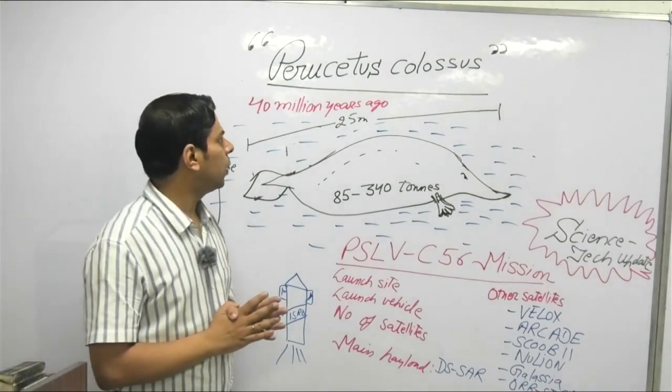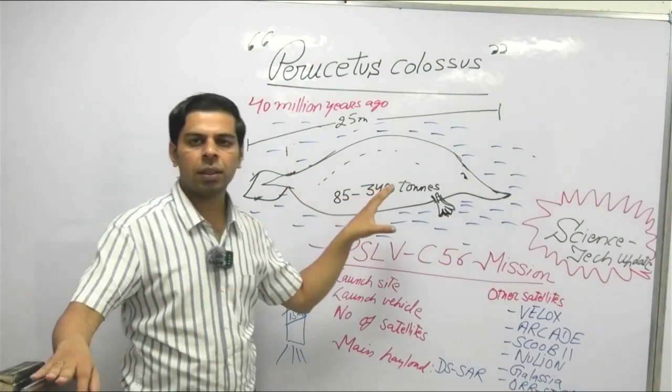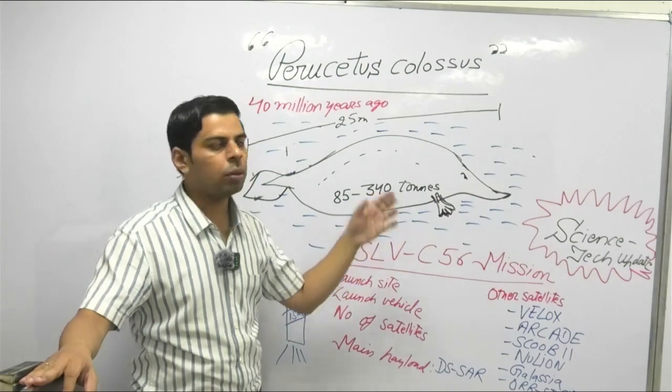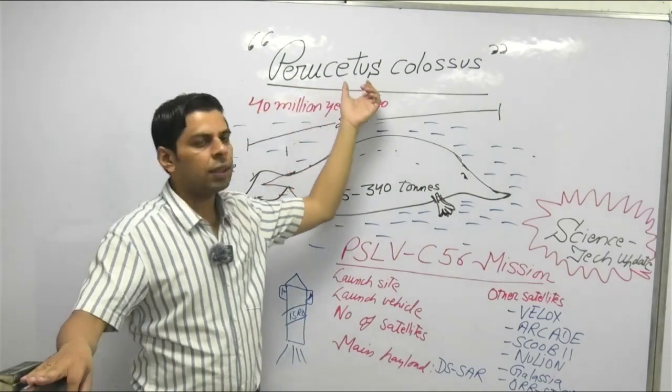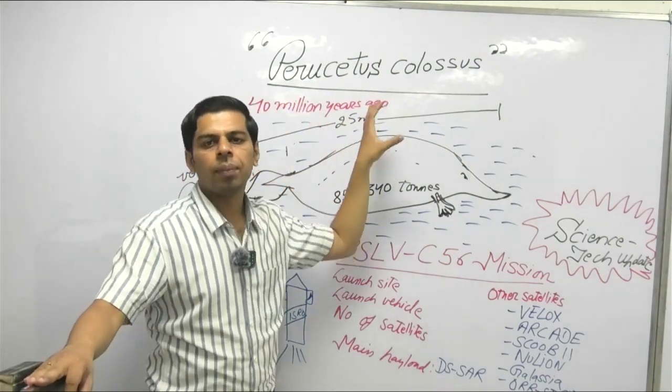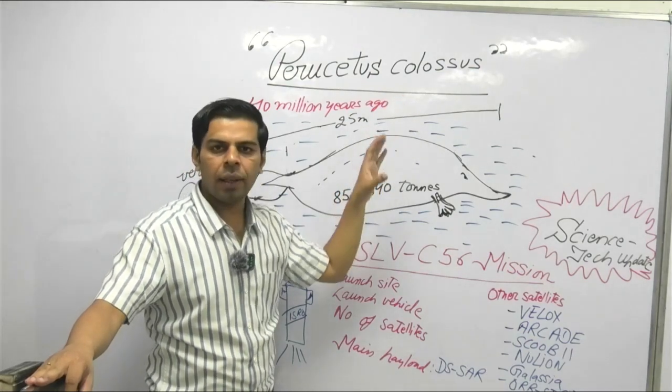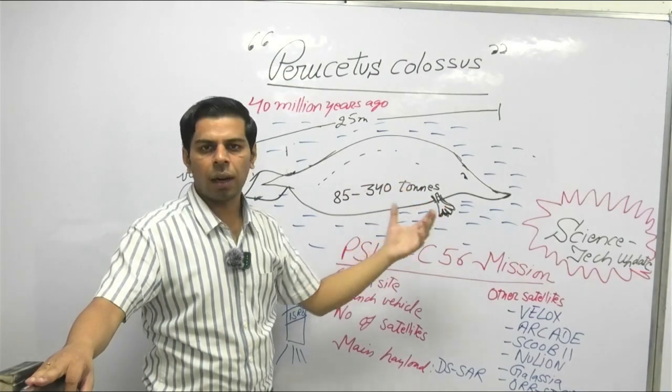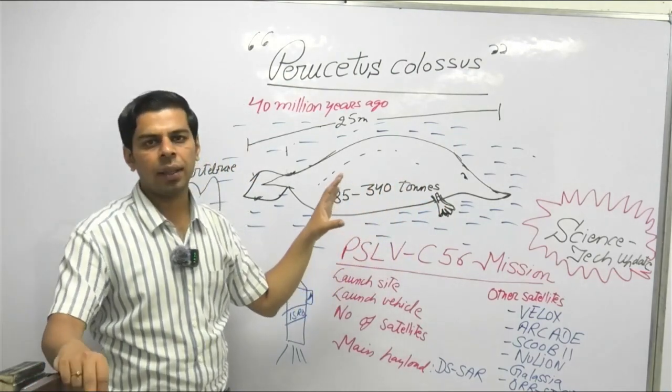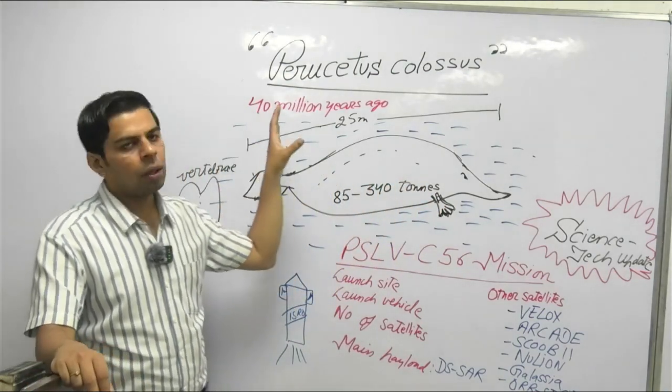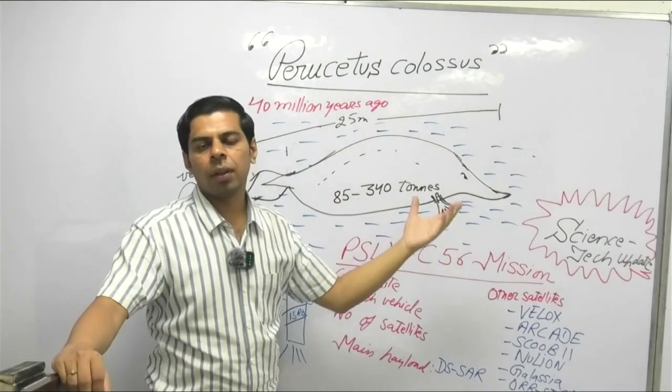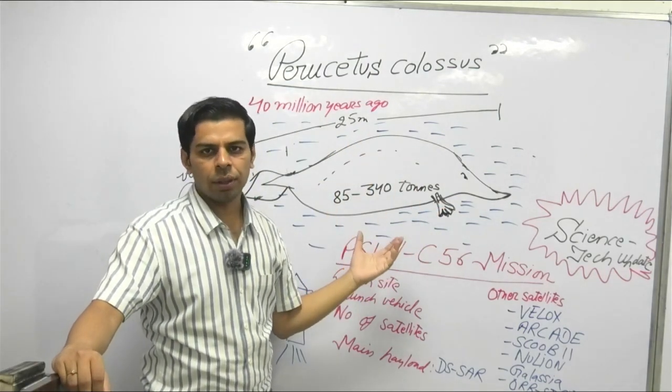Coming to the nomenclature part, since the fossil has been discovered in Peru in South America, the name starts with Peru. Cetus word representing the whale because cetaceans, whales belong to cetacean group. And colossal in any English term represents massive or large size. So in simple terms we can say that it is a Peruvian whale or giant whale of Peruvian origin.